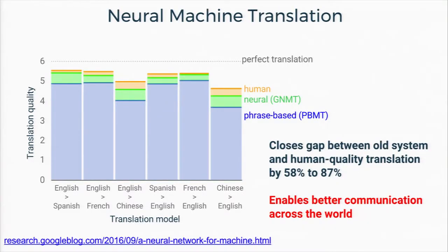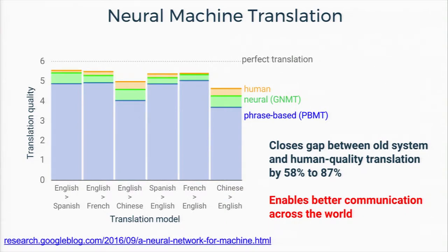Outside of the image domain, there's recently been a huge leap forward in machine translation — reading in sentences in one language and reading out sentences in a different language. The blue bars represent previous handcrafted statistical techniques, the orange bar is human translator accuracy, and the green jump in the middle is the improvement from switching to end-to-end neural machine translation.